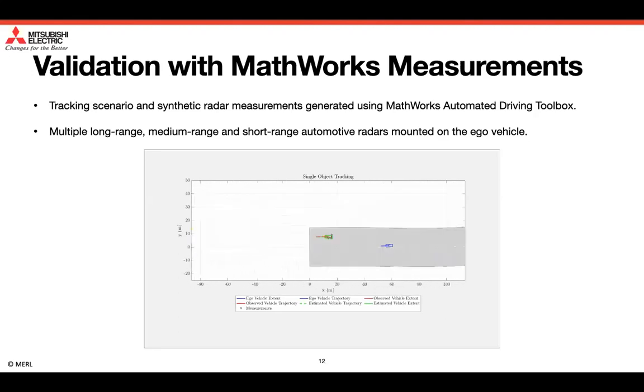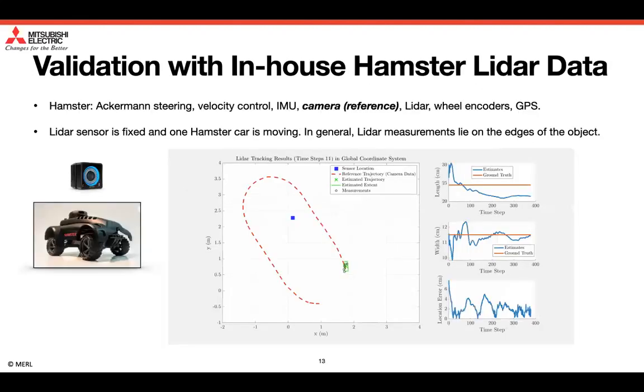Finally, as it is difficult to access real automotive radar measurements, we validate the effectiveness of the proposed method using MERL's in-house Hamster LiDAR data. Hamster is a scaled vehicle test bench platform for rapid prototyping. It has Ackermann steering, velocity control, IMU, camera, LiDAR, wheel encoders, and GPS. In the experiment, the LiDAR sensor is fixed, and one hamster car is moving.